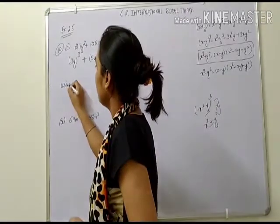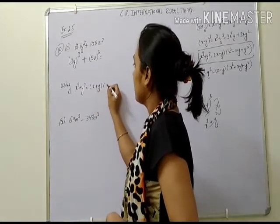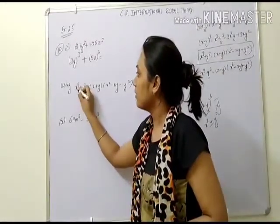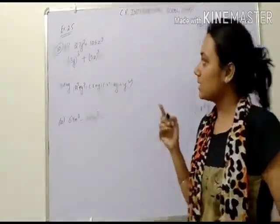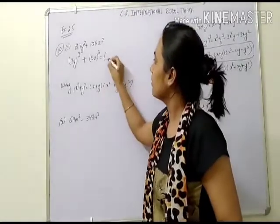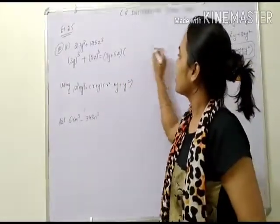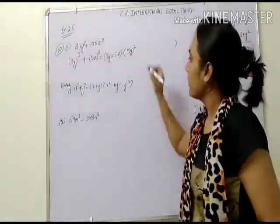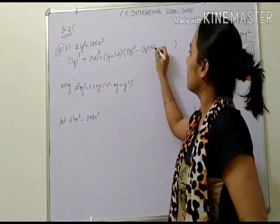Using the identity x cubed plus y cubed equals x plus y, into x squared minus xy plus y squared. Here x is replaced by 3y and y is replaced by 5z. So the answer is 3y plus 5z, into 3y whole squared minus 3y into 5z plus 5z whole squared. Simplifying: 3y plus 5z, into 9y squared minus 15yz plus 25z squared. This is your answer.